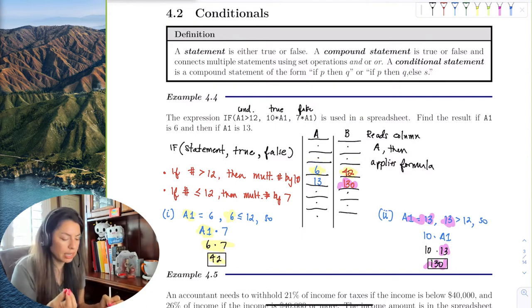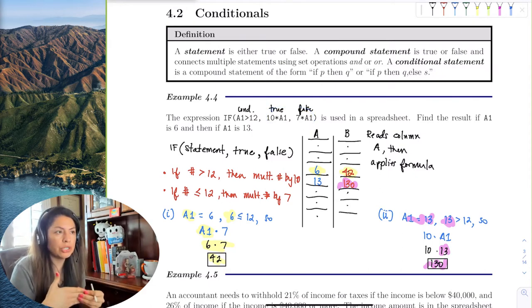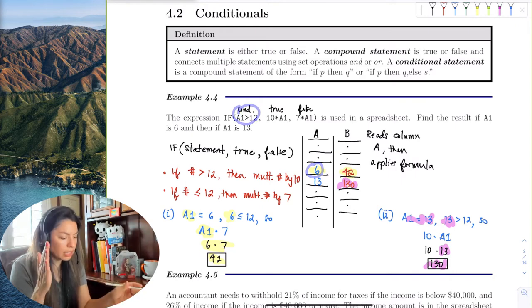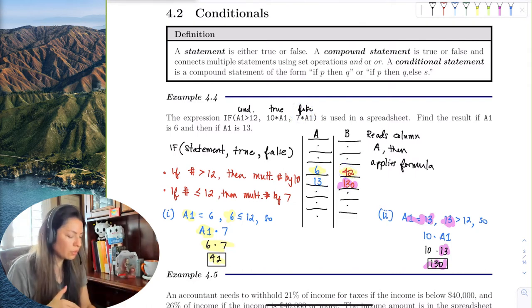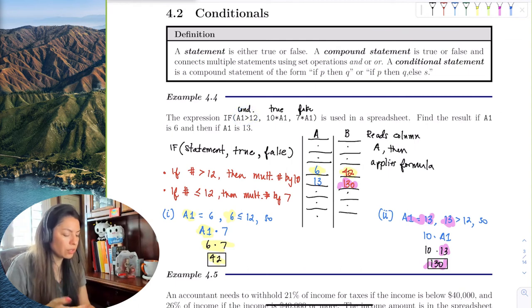So now let's review it in part of logic. It takes 6 and says 6 greater than 12? False. If it's false, it multiplies by 7. It takes 13, says 13, true, it is greater than 12, multiply by 10, spits out 130.